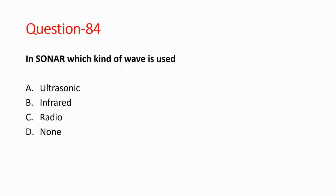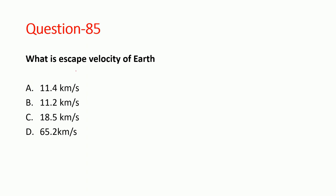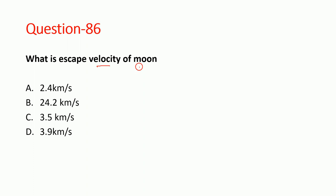Next question: in sonar, which kind of waves are used? Ultrasonic waves are used in sonar. The full form of sonar is Sound Navigation and Ranging. Next question: what is the escape velocity of earth? The escape velocity of earth is 11.2 km/s. Option B is correct. The escape velocity of the moon is 2.4 km/s. Option A is correct.